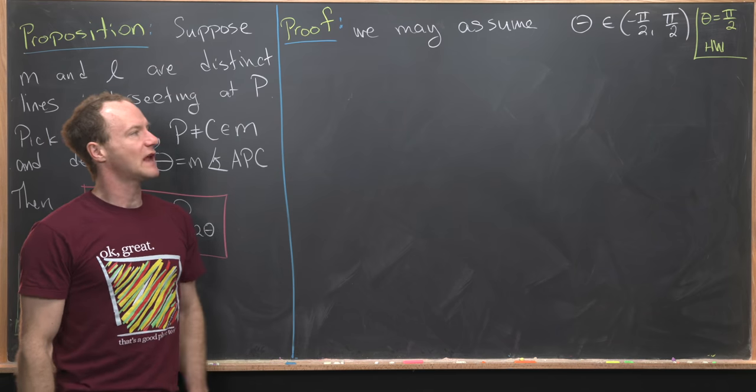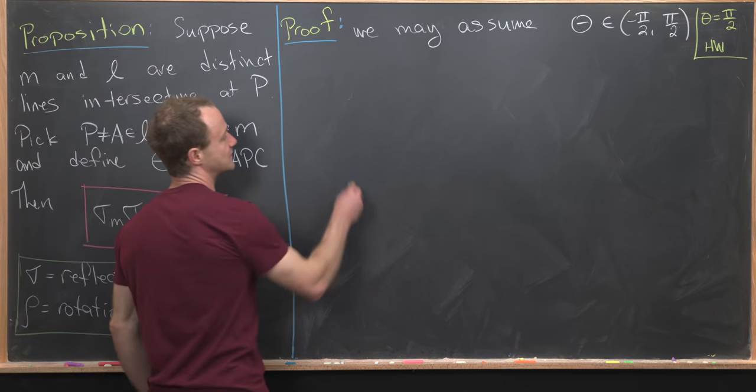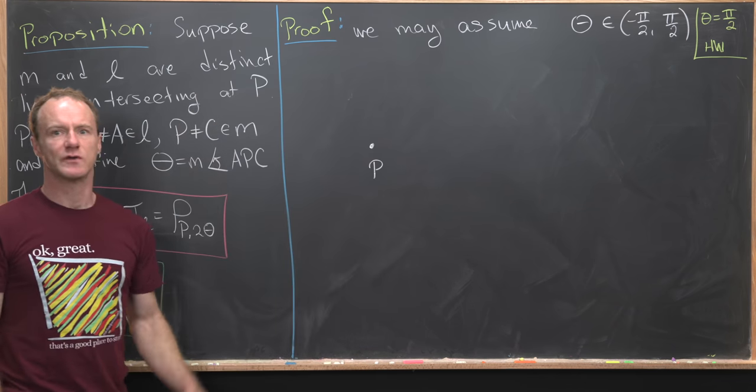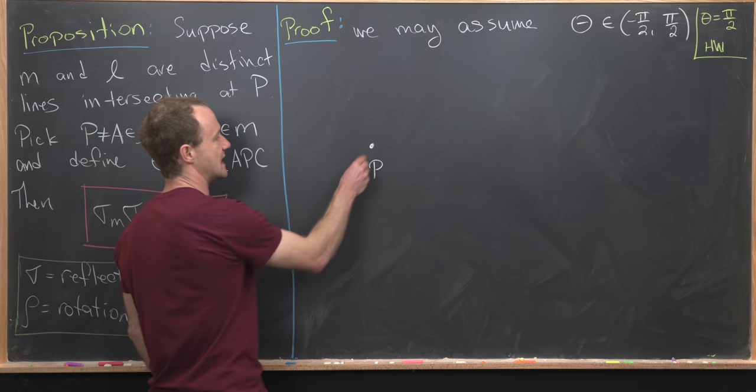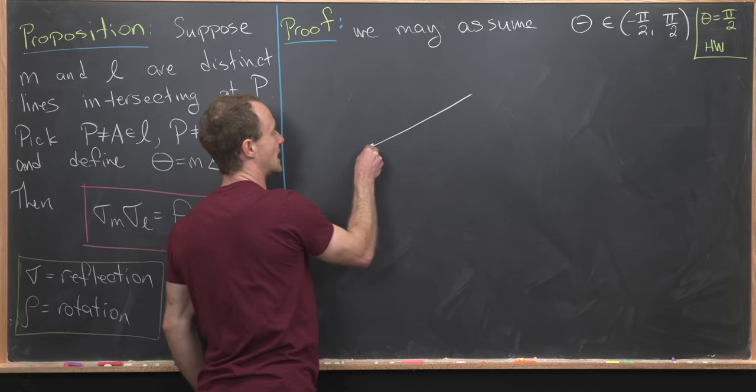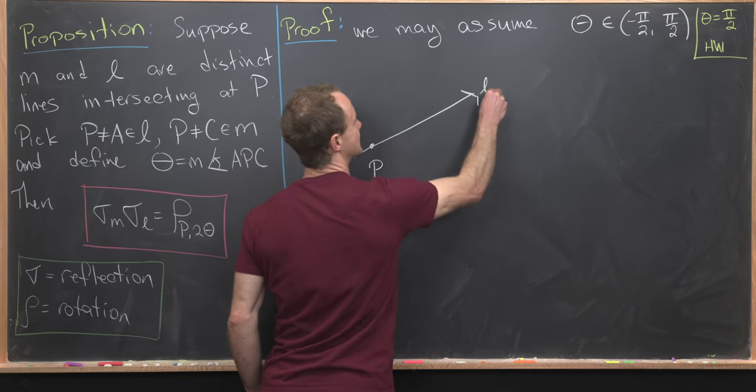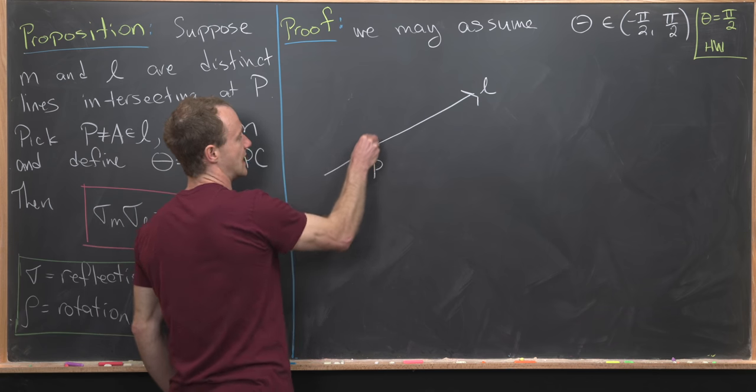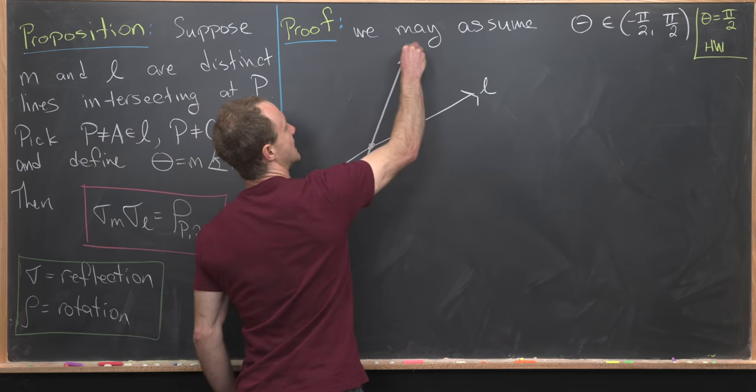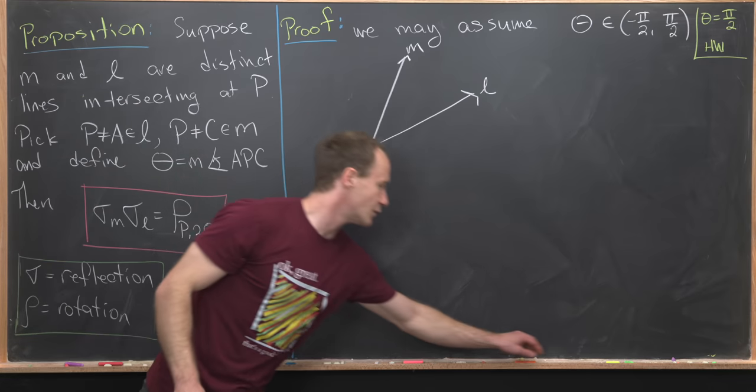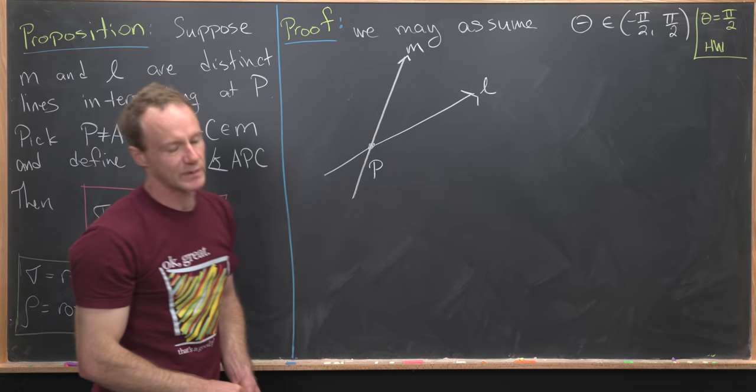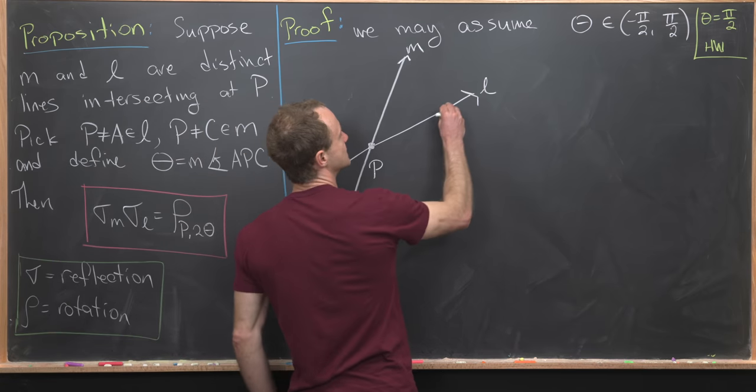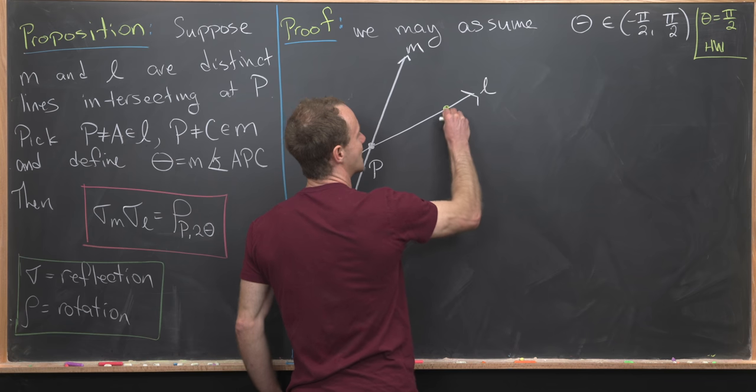Now let's get a sketch of the situation. Let's start with our intersection point P. That point is on line L and line M. So let's put line L like this, and then line M like this. Now let's see what else we need. We need a point A, which is not equal to P, that is on line L. So let's put point A right here.